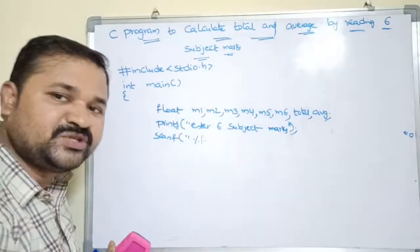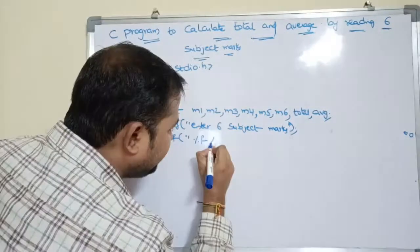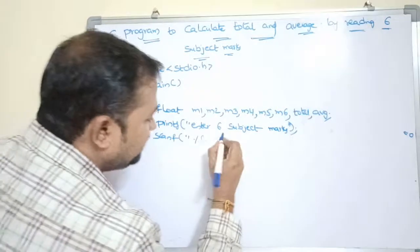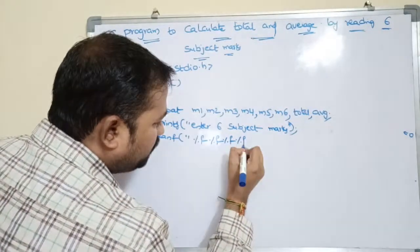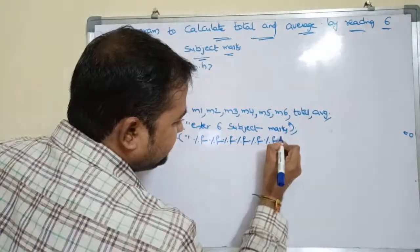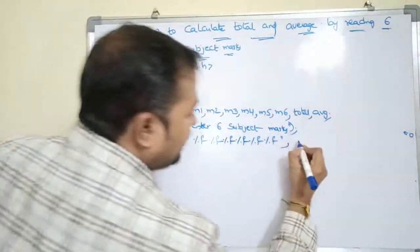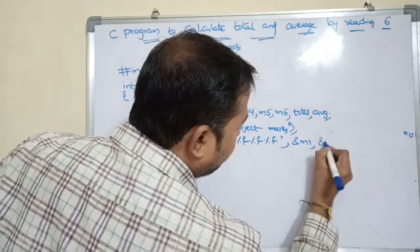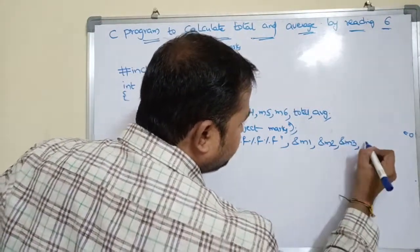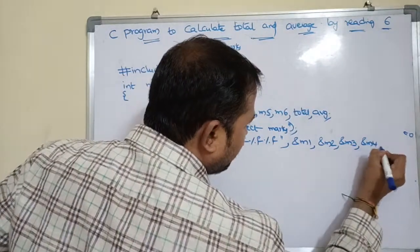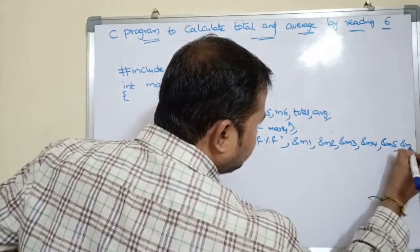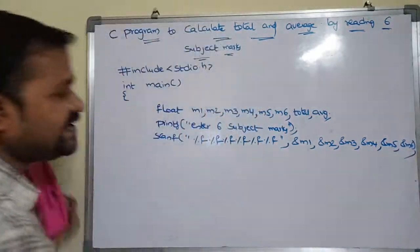We can enter an integer number also, there is no problem. So how many %f do we have to use? 6 %f. So scanf("%f %f %f %f %f %f", &m1, &m2, &m3, &m4, &m5, &m6). So reading is over.